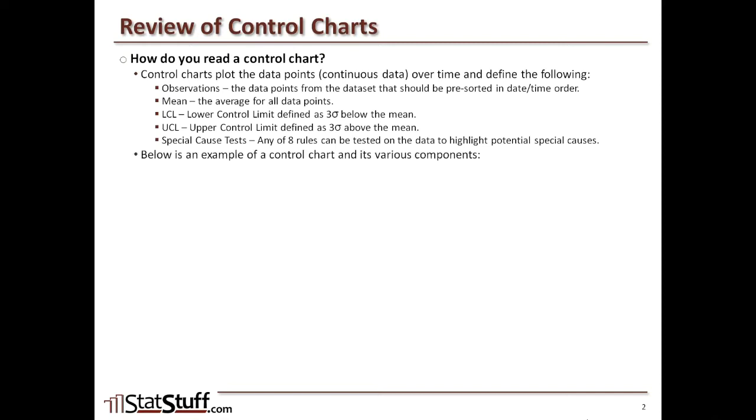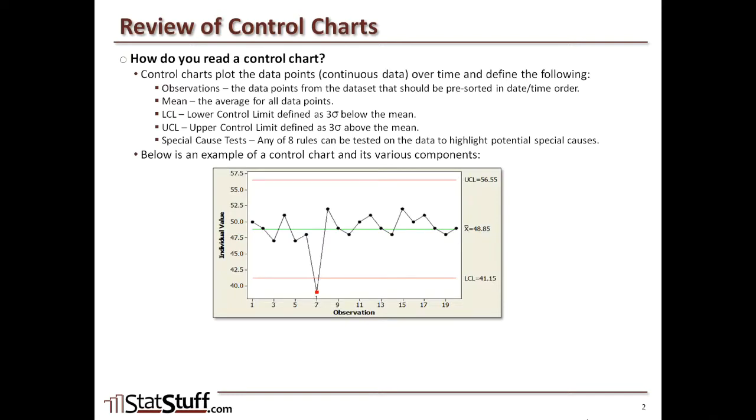As a way of illustration, we can look at a particular control chart example, which tends to be similar for most control charts. First within this control chart, you can see that all the observation points are being highlighted. We can see that there are 20 different observations reflected in time, like a date and time order, starting from the left all the way to the right. Then we also plot the mean, the average for the entire data set.